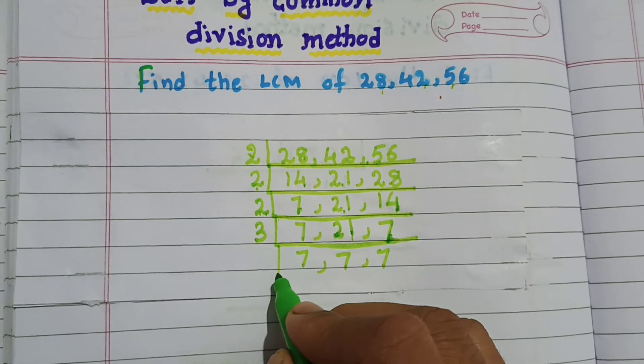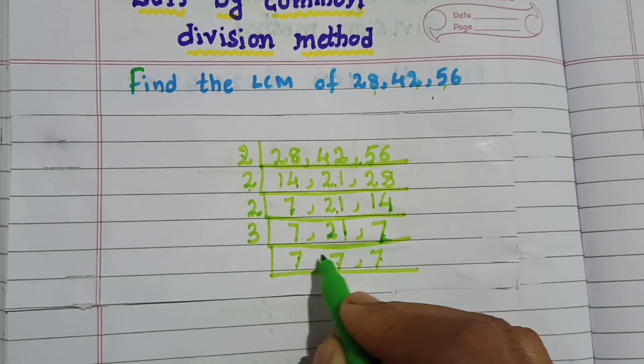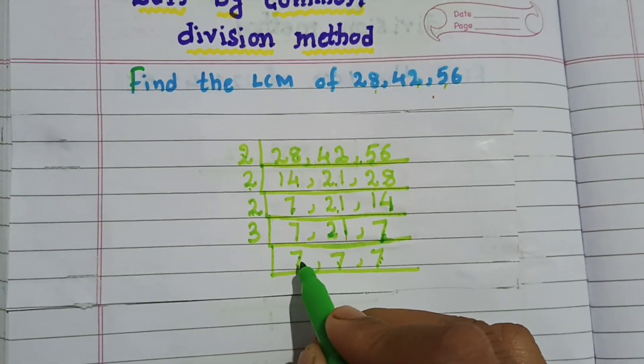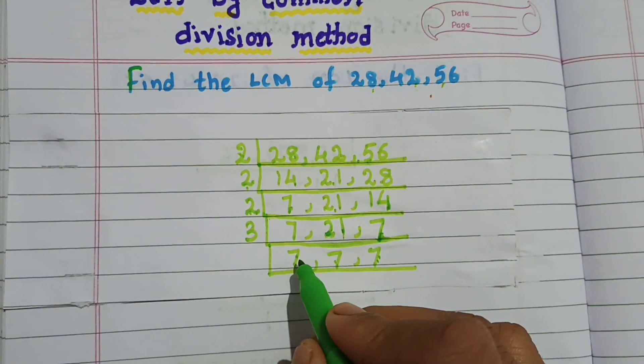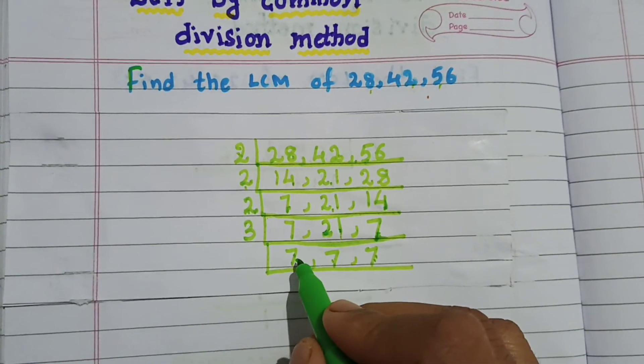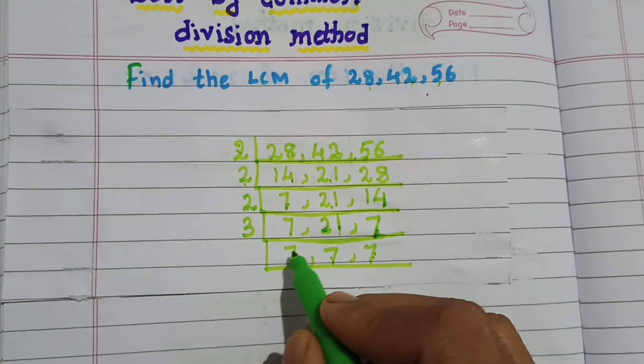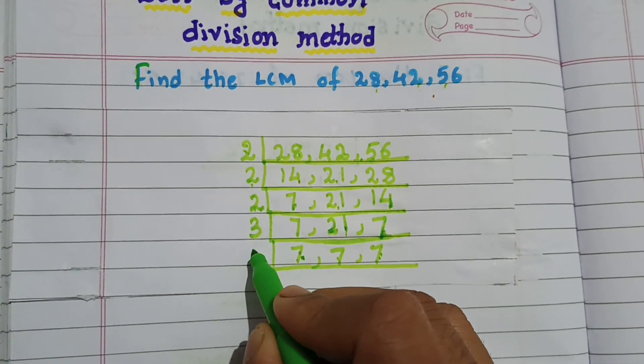Now, 7, 7, 7. Here we have three 7s. This 7 does not divide by 2, does not divide by 3. Next prime number is 5, does not divide by 5 also.